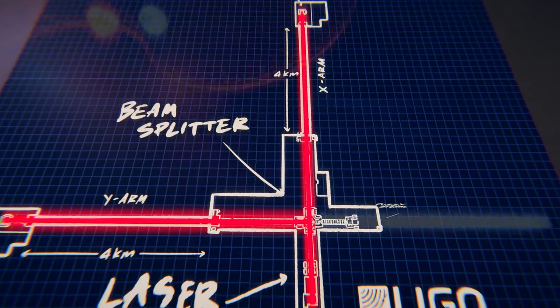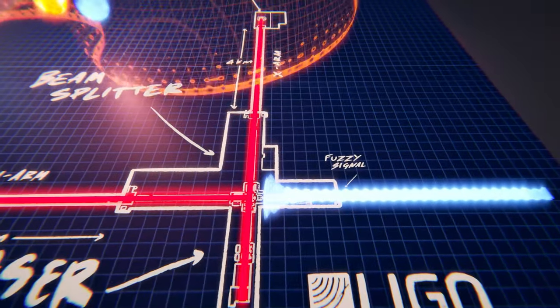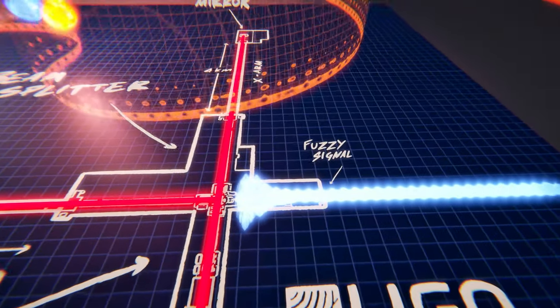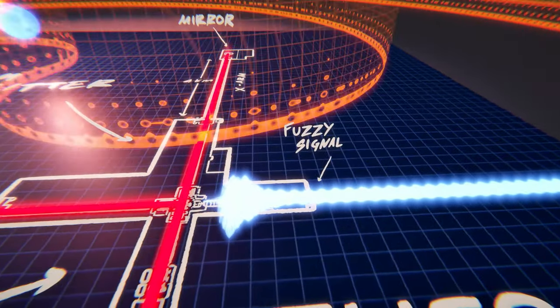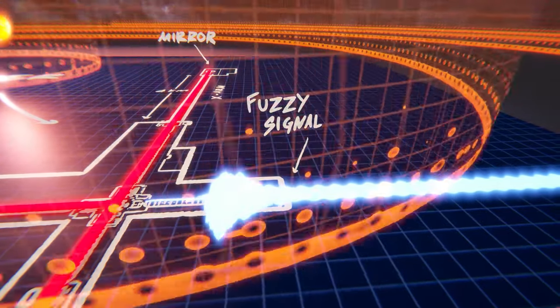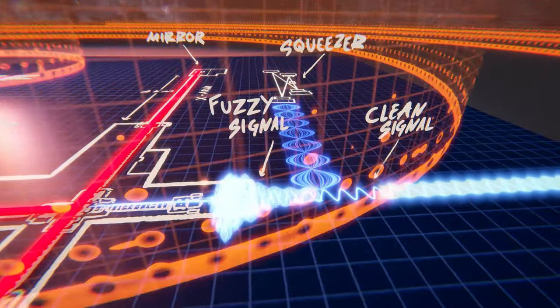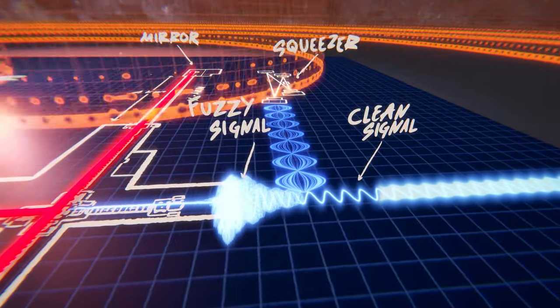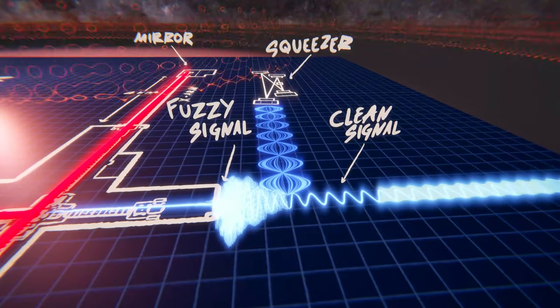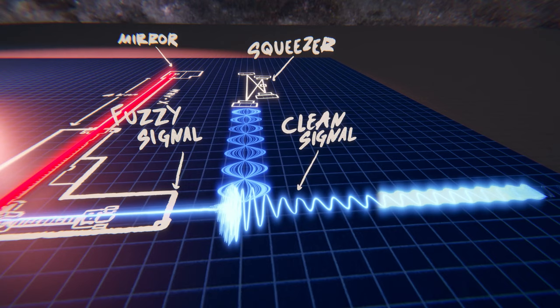When a gravitational wave passes through the Earth, the two LIGO arms become squashed and stretched, letting the light onto our sensor. But the signal is quite noisy though. So to make it less noisy, we use the process called squeezing. This makes the signal less noisy. And this allows us to catch a gravitational wave, which might otherwise be lost in a sea of noise.